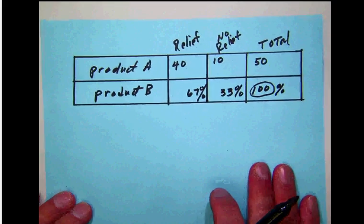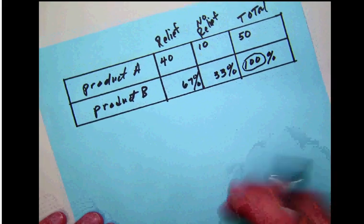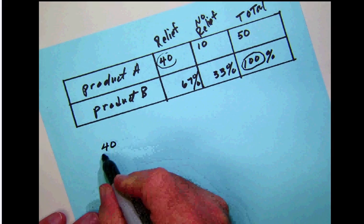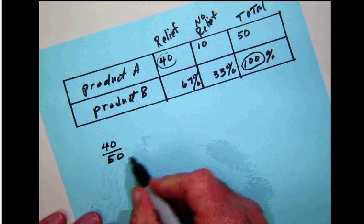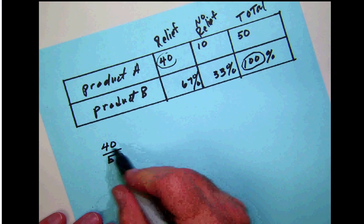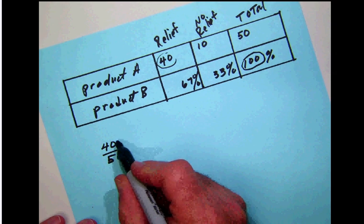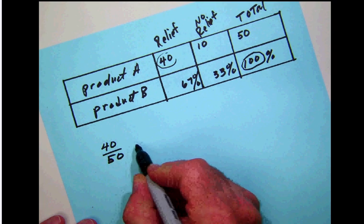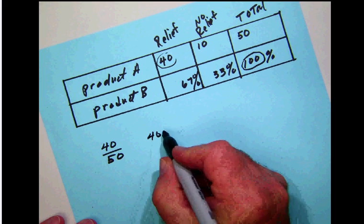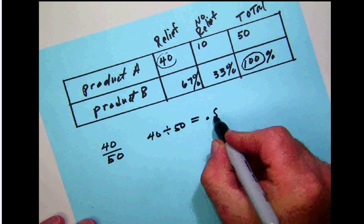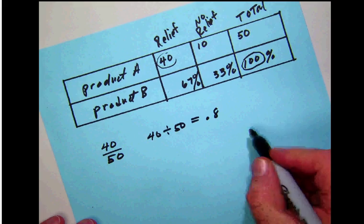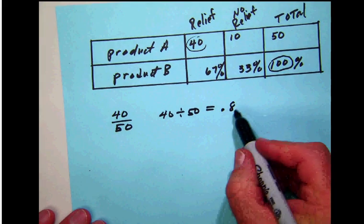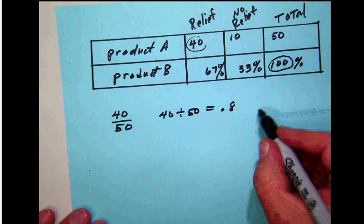The easiest way here would be to take the ones who found relief—that would be 40—and express that as a fraction over the 50 total. So 40 found relief, there were 50 total. 40 divided by 50 is going to give you 0.8. You can do that on your ALEKS calculator if necessary. And remember that in order to convert a decimal to a percent, we move the decimal two places to the right.